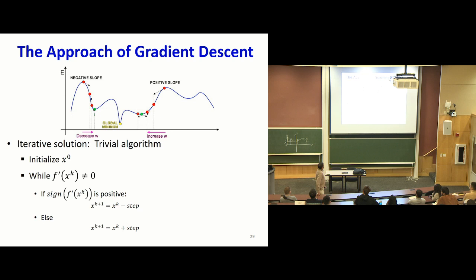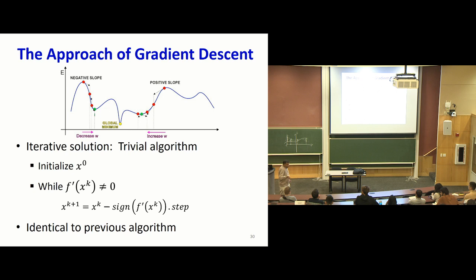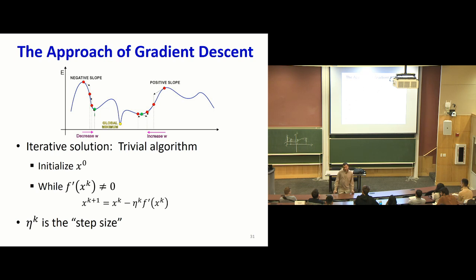Instead of having this if-else clause, I could just multiply by the negative of the derivative sign. So if the derivative is negative, minus and minus becomes plus — take a step forward. If the derivative is positive, minus and plus remains minus — take a step backward. And now I can collapse this further: instead of just using the sign of the derivative, I can just use the derivative itself. This retains the sign but also retains the value.